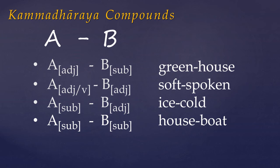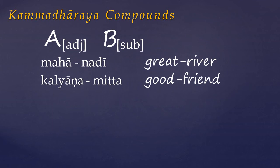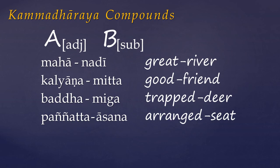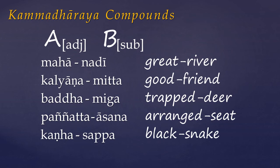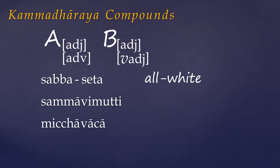Now let's look at some examples in Pali. An adjective qualifying a substantive is the most common, and the adjective can equally be a verbal adjective such as a participle. Like the English terms blackbird and greenhouse, the combination can imply more than just the sum of the parts. So here black snake is not just a snake which happens to be black, but is a particular variety of snake. Double adjectives are also quite common, and this group includes adverbs, especially with participles. So we have rightly freed or right release, and wrong speech.